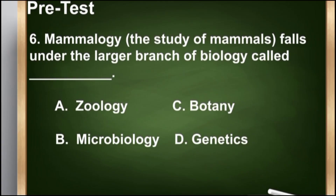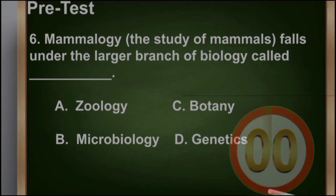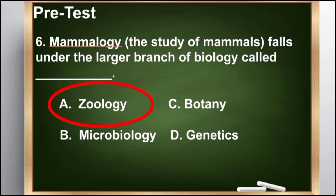Number 6: Mammalogy — the study of mammals — falls under the larger branch of biology called ___. A. Zoology, B. Microbiology, C. Botany, D. Genetics. The correct answer is letter A, zoology.